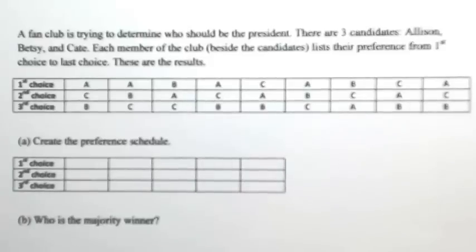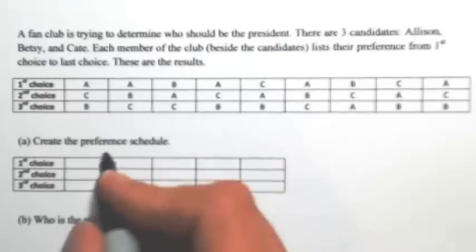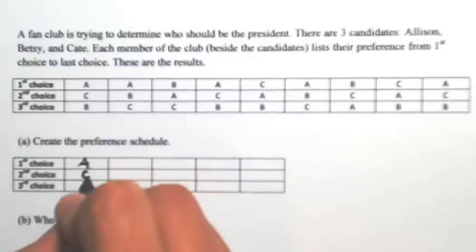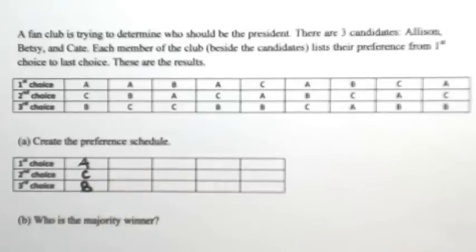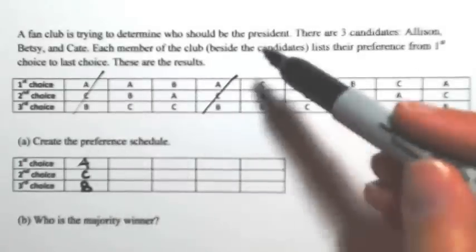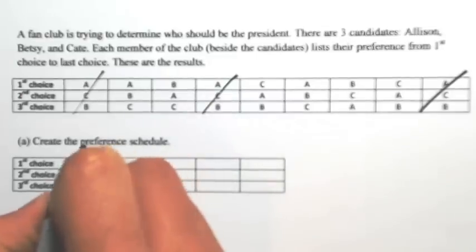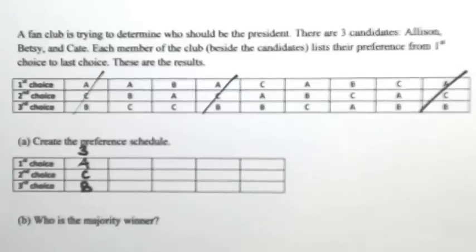What we're going to do is create the preference schedule. Essentially, we're going to condense this table into one table that shows all of the votes. The first voter voted A, C, B. Going through and counting how many people voted the same way, three people voted that exact same way. So three people voted A, C, B.